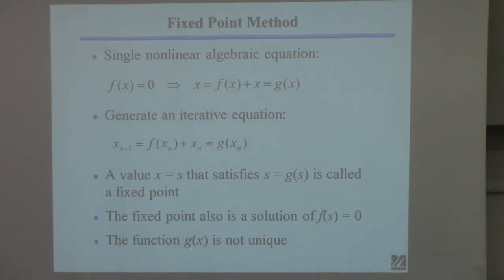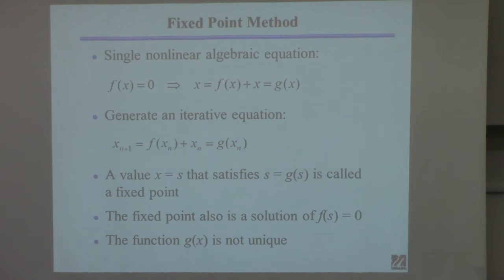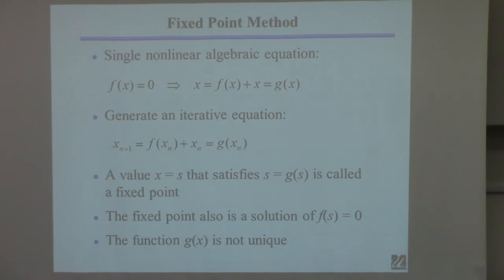This function is not unique. I could have added 2x onto both sides of the equation, or I could take part of the function f and factor it out to get the x. There's an infinite number of ways to do this. I'll show you an example where if you construct the function one way it works, and another way it doesn't, but you have no idea ahead of time which way will work.